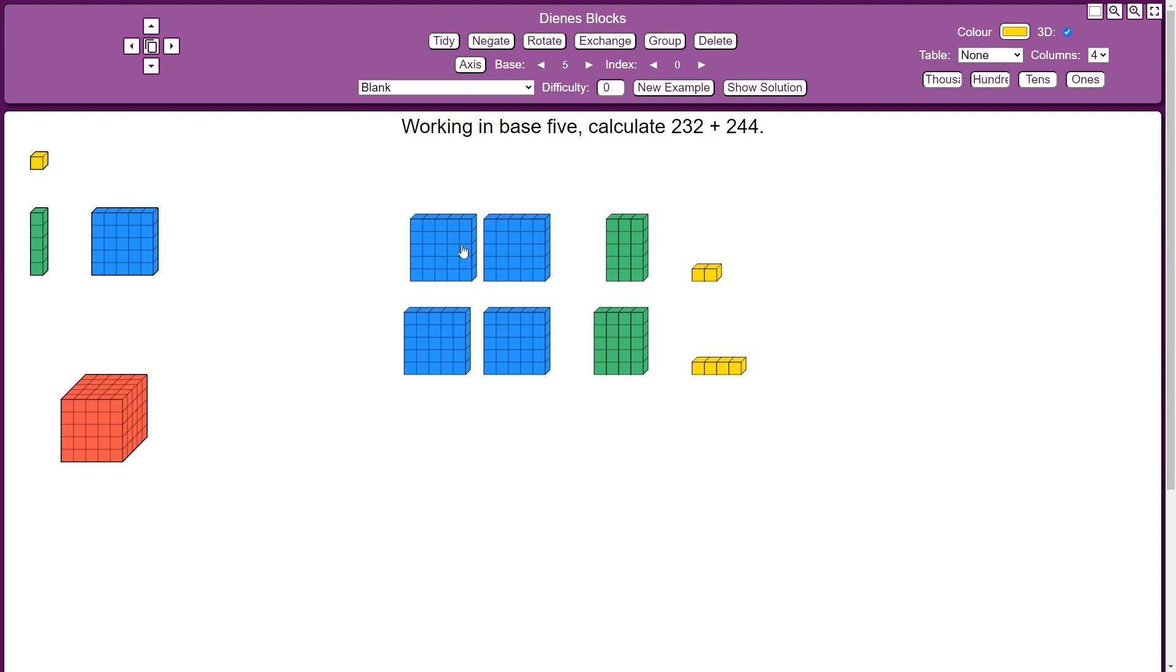Now, the method of addition works exactly the same as base 10 here, but with the key difference that we're grouping in 5s rather than 10s. So normally in base 10, I wouldn't group these up, because that's just 6 units. But in base 5, we have to group that up to make a group of 5 with 1 unit left over and carry the 5 forwards.